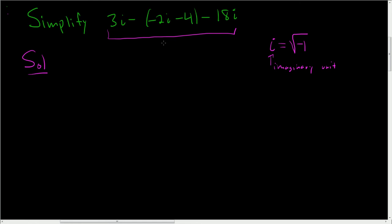In this problem, all we have to do is simplify. So let's see, there's a negative 1 here. We're going to distribute the negative 1, so we have 3i.